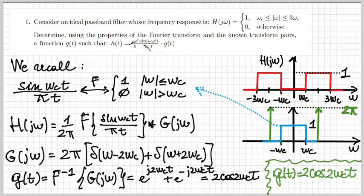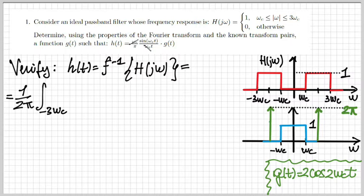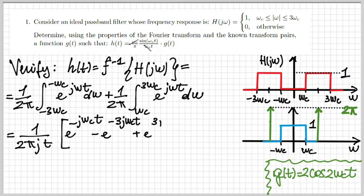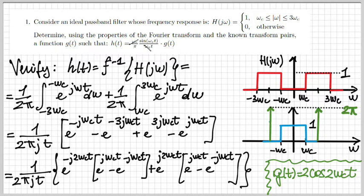We can verify that. How to verify it? Simply, we go on and calculate h of t as the anti-transform of h of j omega explicitly now. So h of j omega is the signal in red, remember? So we can break this down into two integrals that run between minus three omega c and minus omega c and between minus omega c and three omega c. So if I just try to solve these integrals, which are simple, I obtain four complex exponential terms.